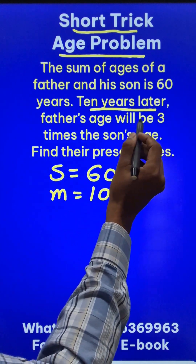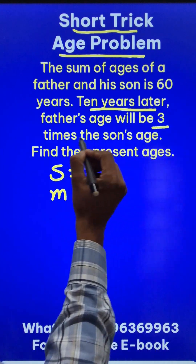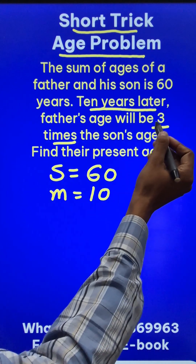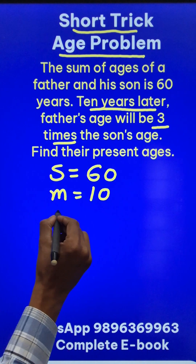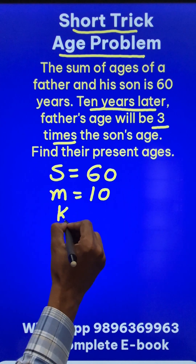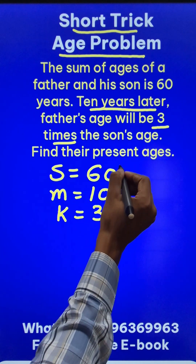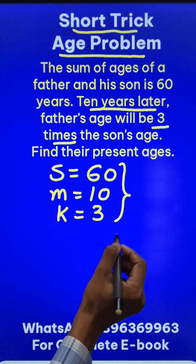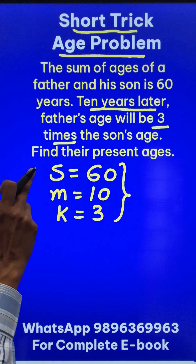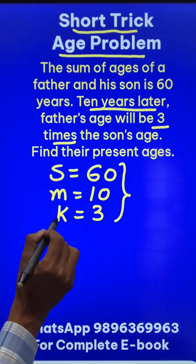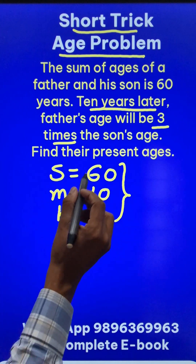Father's age will be 3 times the son's age. So 3 times — and this 3 will be taken as the value of k. And that's all we need: we need the sum S, the value of m, and the value of k.